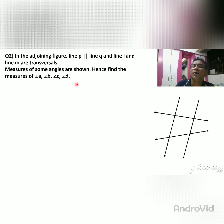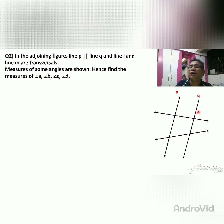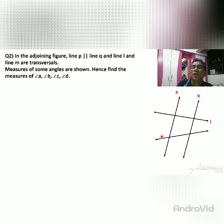First we draw the diagram. This is line P and this is line Q — they are parallel to each other, as given. Then we have the two transversals L and M. These are the two transversals and these are the two parallel lines P and Q according to the given information.